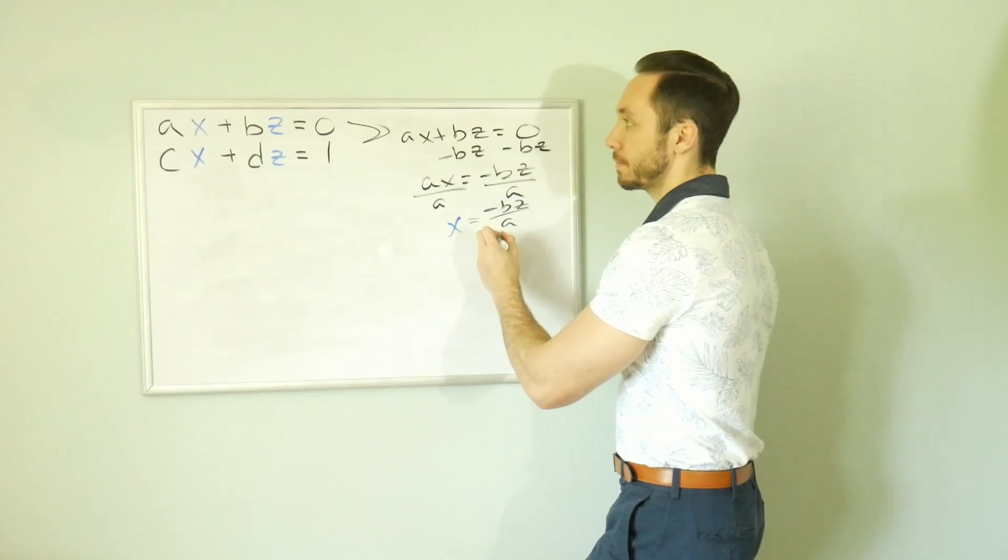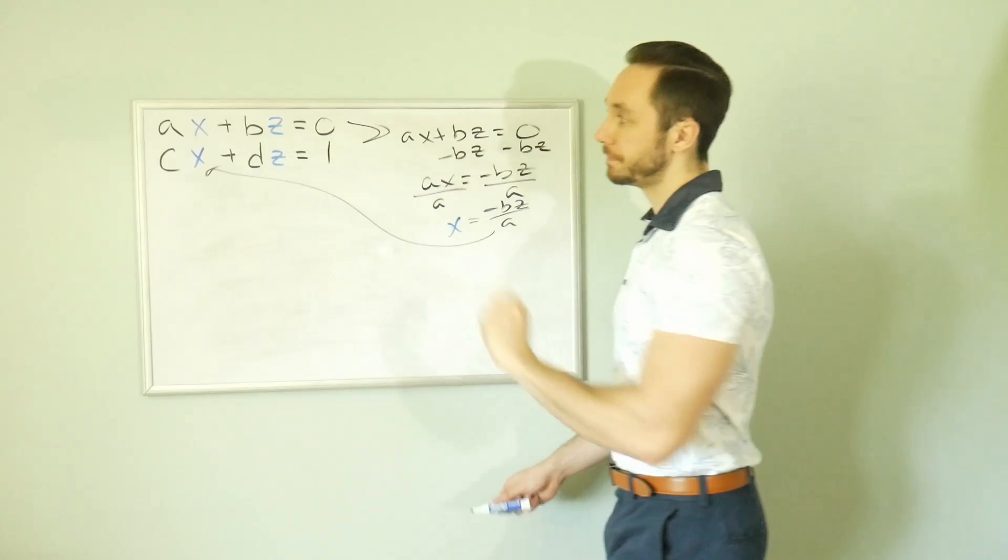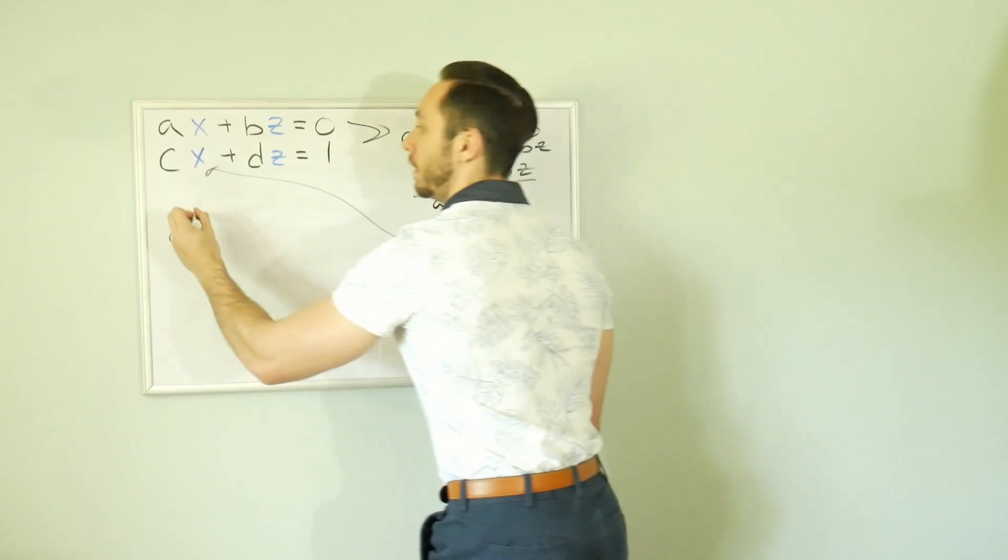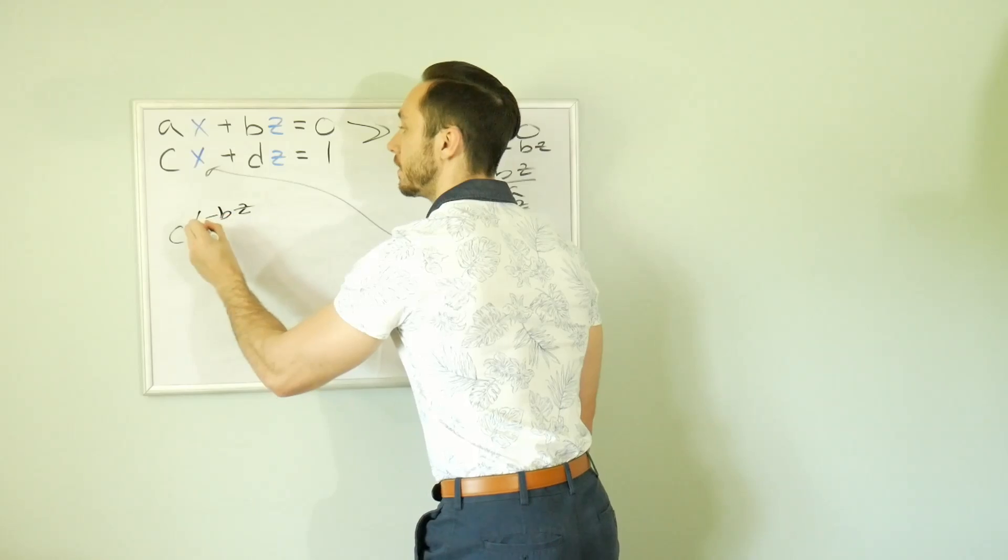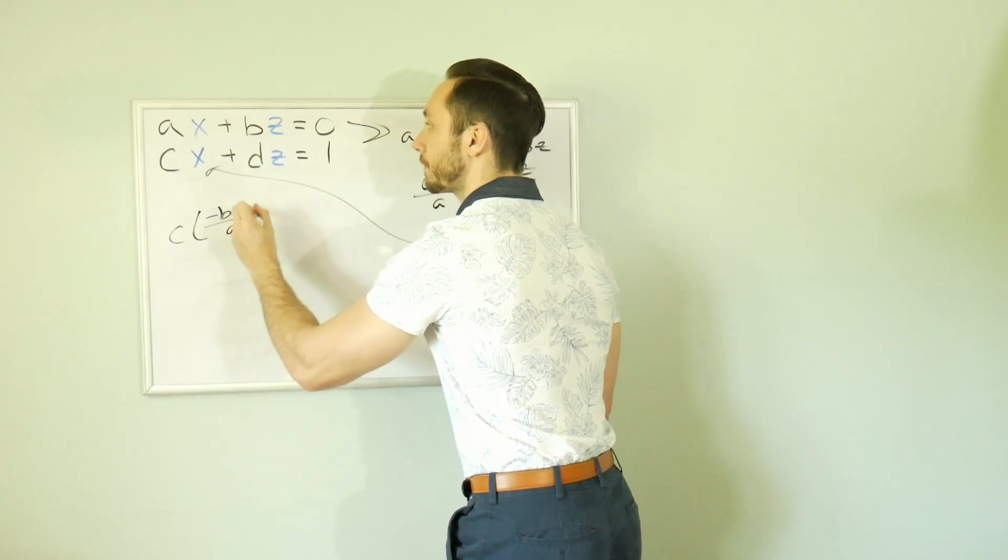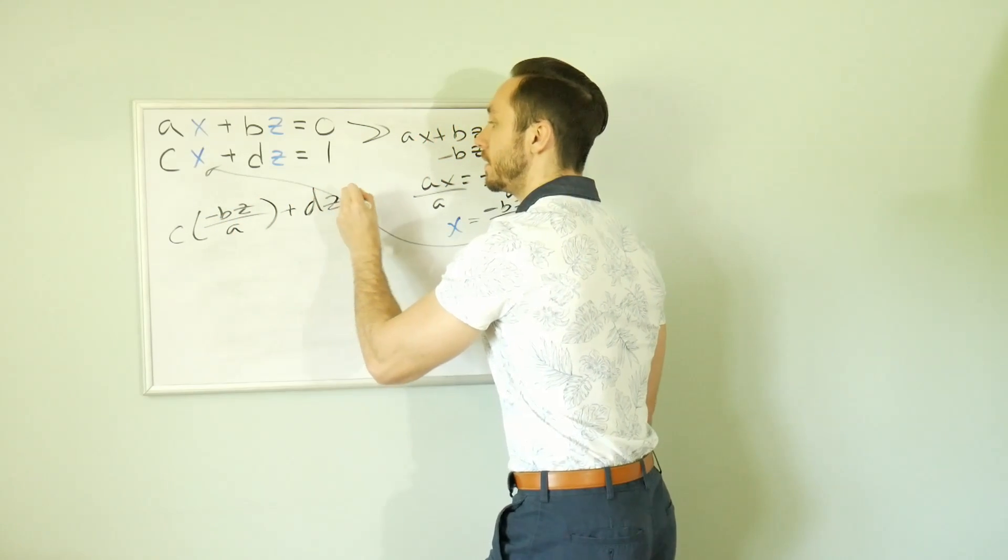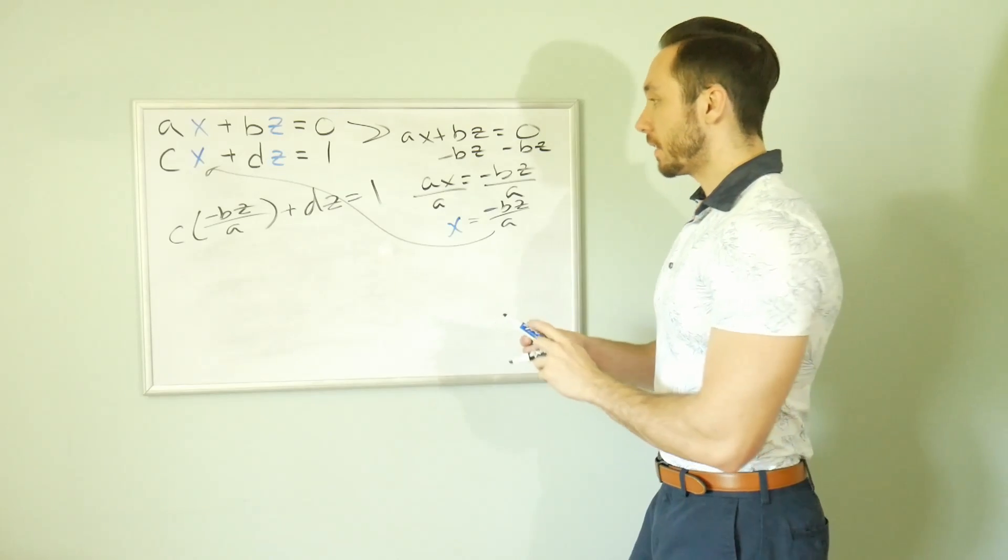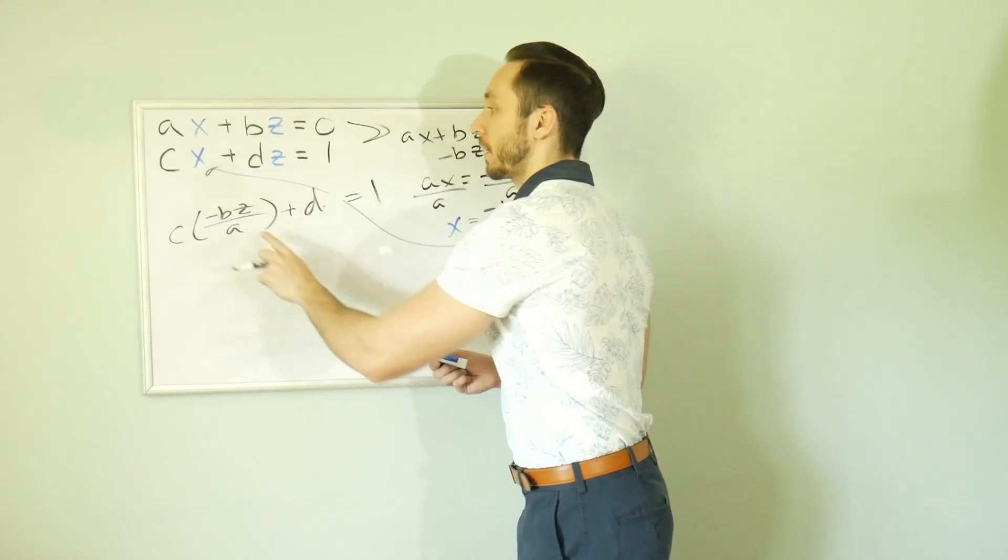Let's take this expression and plug it into X here. We're going to get C times negative BZ over A plus DZ is equal to one. So this is kind of good news. It's hard to tell. Maybe I'll make it a little bit more color codey.